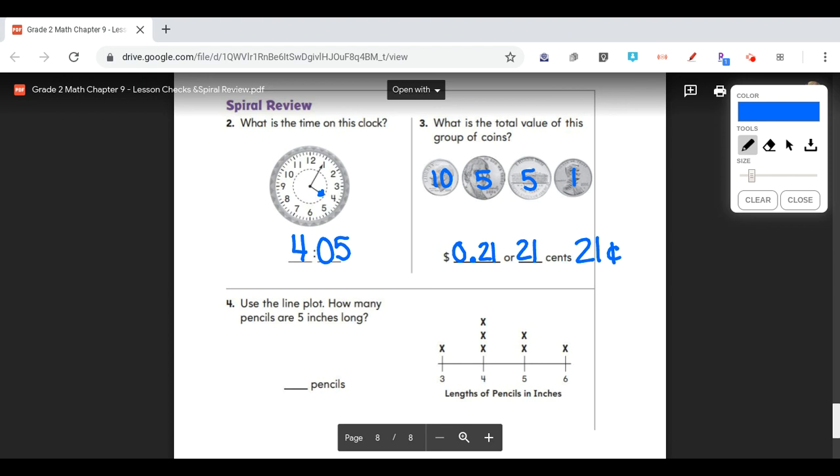Then the last one, it says, use the line plot. How many pencils are 5 inches long? It says length of pencils in inches. We're going to find our 5. And above the 5, there are 2 X's. That means there are 2 pencils that are length 5 inches. So those are just a few more examples of some math skills that you've learned this year. This helps. And keep looking out for some other videos to help you as well. See ya.